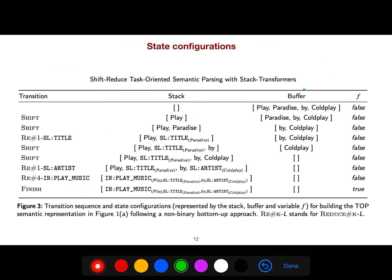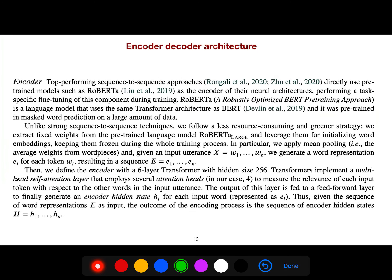First, everything is in the buffer and the stack is empty. Then gradually the stack becomes larger and the buffer becomes empty. We have different transitions — for example, reduce-one slot-title, reduce-one slot-title, reduce-four in play-music.